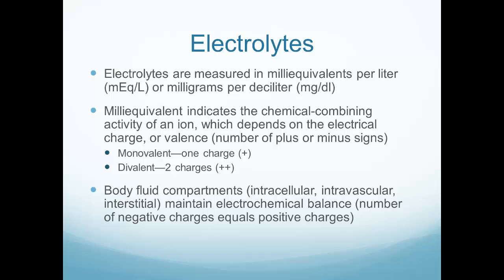Some electrolytes have one charge, like sodium with one positive charge, while others like calcium have two positive charges. In our body fluid compartments, we have an intracellular compartment inside the cell, an intravascular compartment inside the blood vessels, and an interstitial compartment — pretty much the rest of the tissue. Each area has its own balance of electrolytes.